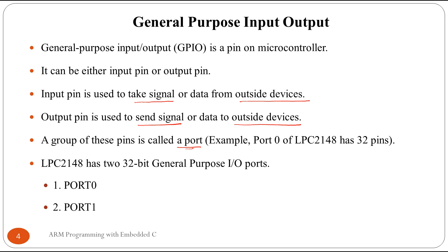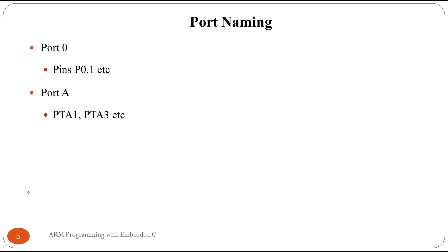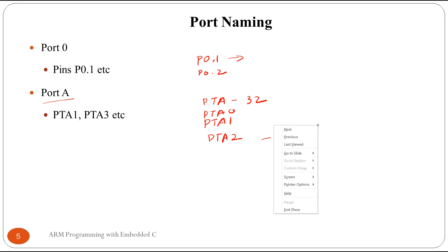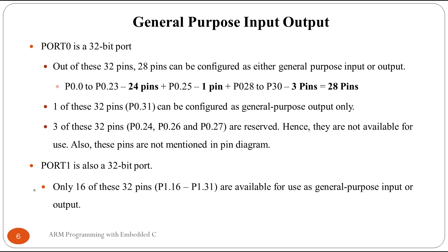In LPC2148 we have Port 0 and Port 1, and Port 0 has 32 pins. So basically in LPC2148 we have two 32-bit GPIO ports. Different microcontrollers use different naming — for example, another microcontroller may have Port A with pins named PTA0, PTA1, PTA2, and so on. Similarly in LPC2148, pins are defined as P0.1, P0.2, and likewise.